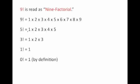Five factorial is one times two times three times four times five. Three factorial is one times two times three. And then by definition, we need a couple of things defined: one factorial by definition is one, and zero factorial by definition is also one. You need to know these two terms — these are definitions.